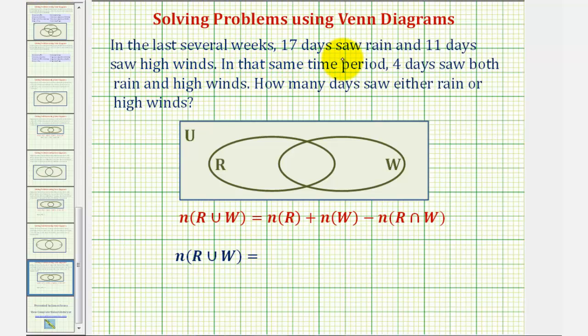In the last several weeks, 17 days saw rain and 11 days saw high winds. In that same time period, four days saw both rain and high winds. How many days saw either rain or high winds?